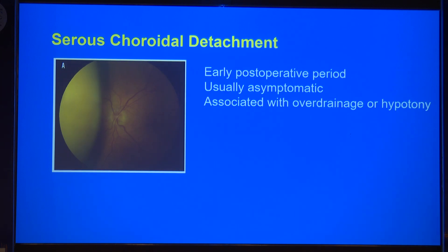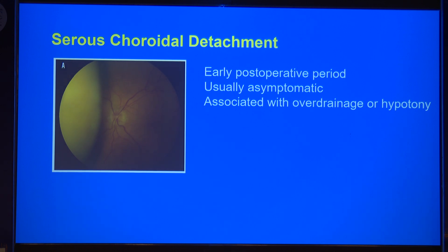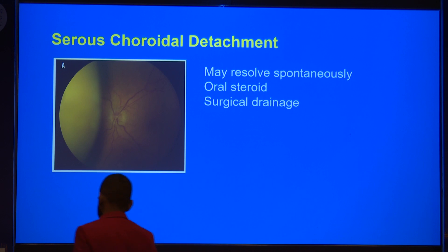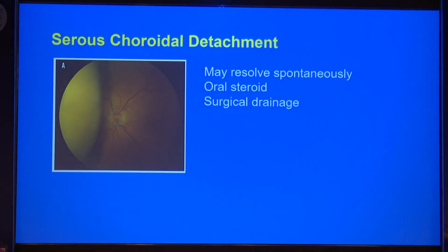Serous choroidal detachment usually happens in the early post-operative period, sometimes immediately after glaucoma filtration surgery. Most patients are usually asymptomatic apart from hypotony, because the detachment is located in the periphery and the macula remains fine, so vision remains fine. It is usually associated with overdrainage and hypotony. It usually responds and resolves spontaneously with correction of hypotony. Oral steroids are sometimes given when hypotony is taking longer to resolve or when the serous detachment persists after resolution of hypotony. Surgical drainage can be done when needed.